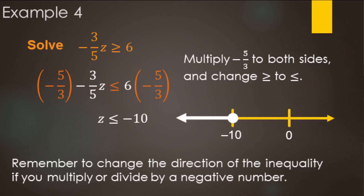Mental note — common mistake: just because there's a negative somewhere in your question doesn't mean you switch the sign. It has to be multiplied or divided by a negative to switch the direction of the inequality.